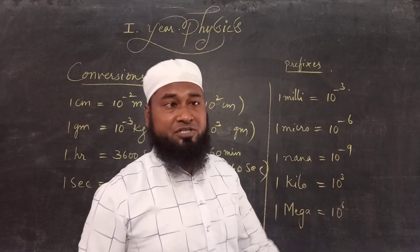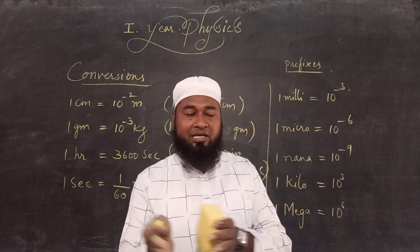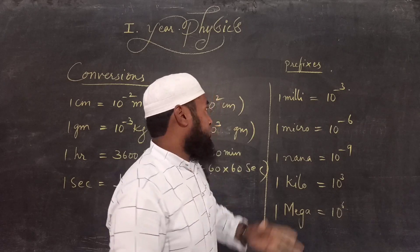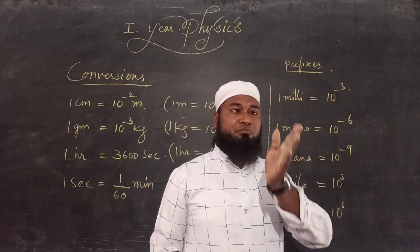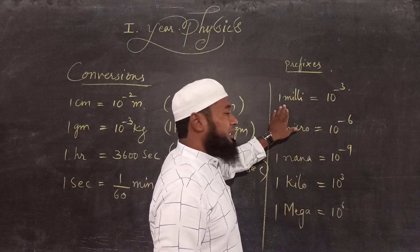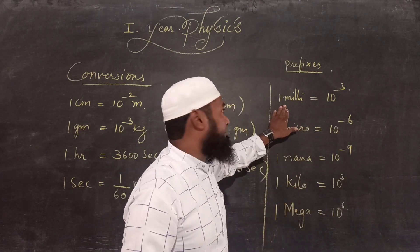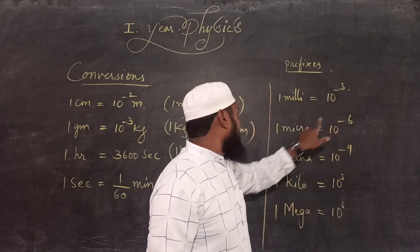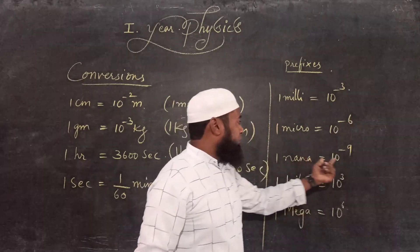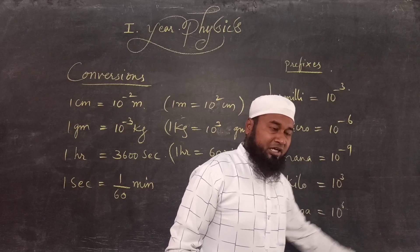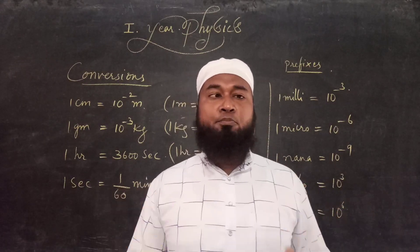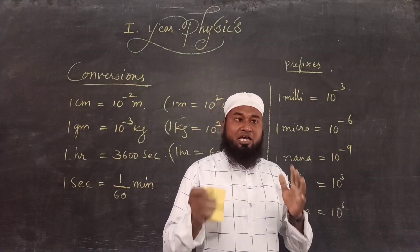You also need to multiply some prefixes. In problems, you will get numbers with milli, kilo, micro, mega, etc. — these are called prefixes. You have to convert these into the required system of units. 1 milli equals 10 to the power minus 3. 1 micro equals 10 to the power minus 6. 1 nano equals 10 to the power minus 9. 1 kilo equals 10 to the power 3. 1 mega equals 10 to the power 6. These are the most important basics of physics which you require in first year.